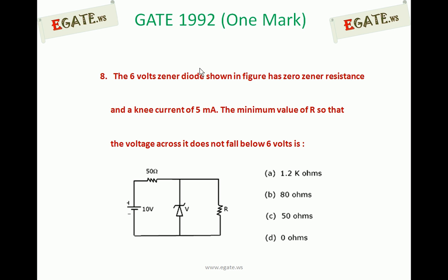Look at the diagram. The 6V Zener diode shown in figure has zero Zener resistance and a knee current of 5mA. The minimum value of R so that the voltage across it doesn't fall below 6V is: a) 1.2kΩ, b) 80Ω, c) 50Ω, d) 0Ω.